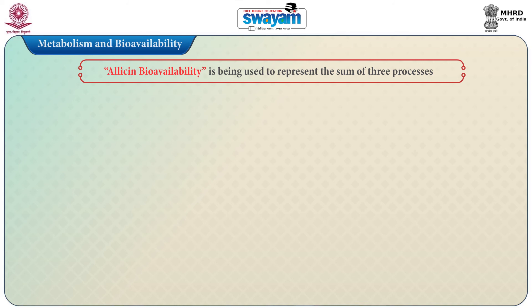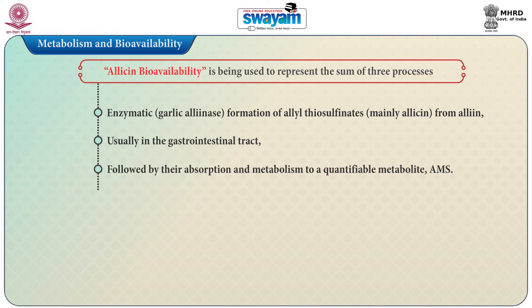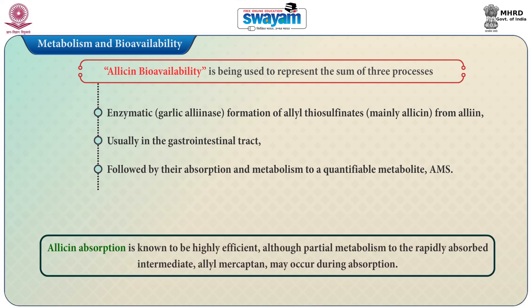The term 'allicin bioavailability' is used to represent the sum of three processes: enzymatic — that is, garlic alliinase — formation of allyl thiosulphenates (mainly allicin) from alliin, usually in the gastrointestinal tract, followed by their absorption and metabolism to a quantifiable metabolite, allyl methyl sulfide. Allicin absorption is known to be highly efficient, although partial metabolism to the rapidly absorbed intermediate allyl mercaptan may occur during absorption.